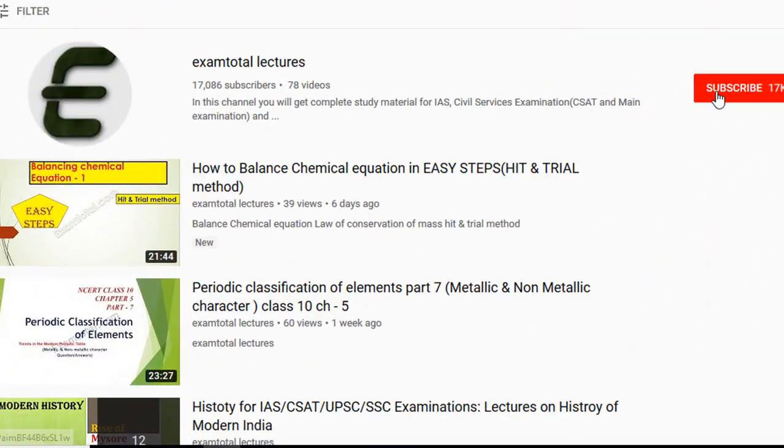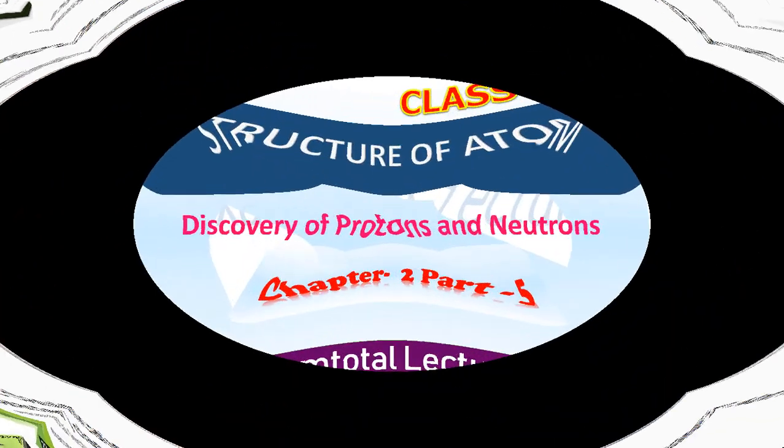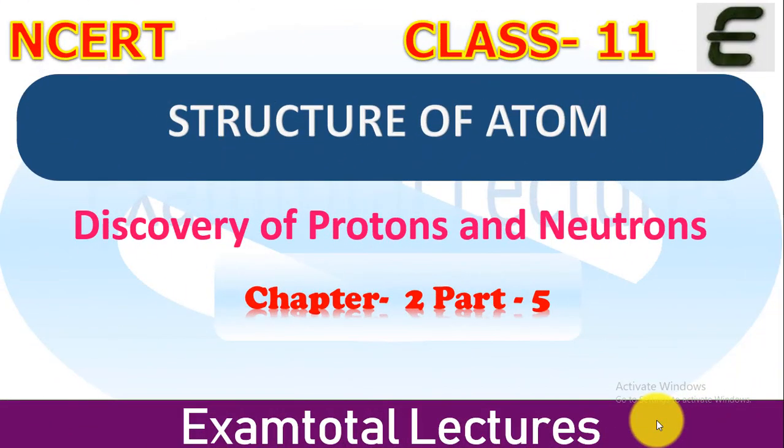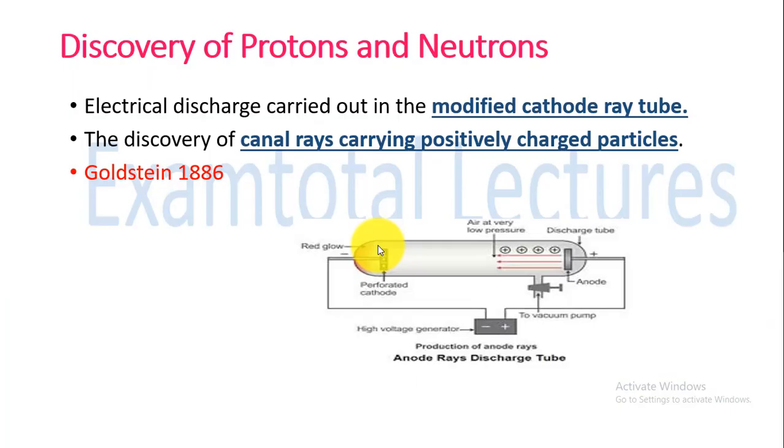To subscribe to Exam Total Lectures, click on the subscribe button and bell icon for latest notifications. Hello everyone, welcome to Exam Total Lectures. This is NCERT Class 11 Chapter 2 Part 5: Structure of Atom. In this lecture we are going to cover the topic Discovery of Protons and Neutrons. In the last part we covered electrons, their discovery, and charge to mass ratio. Next is the proton. Electron is a negatively charged particle, proton is a positively charged particle, and neutron is neutral. How were these discovered?